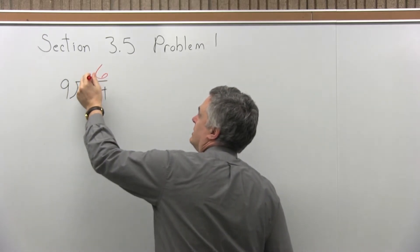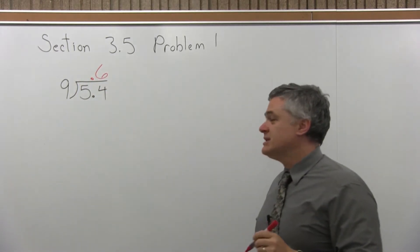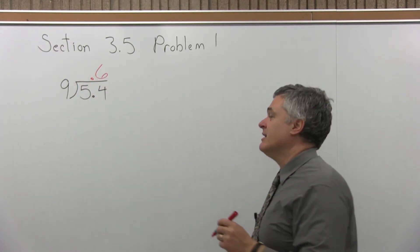It goes straight up. So the answer is 0.6. 5.4 divided by 9 is 0.6.